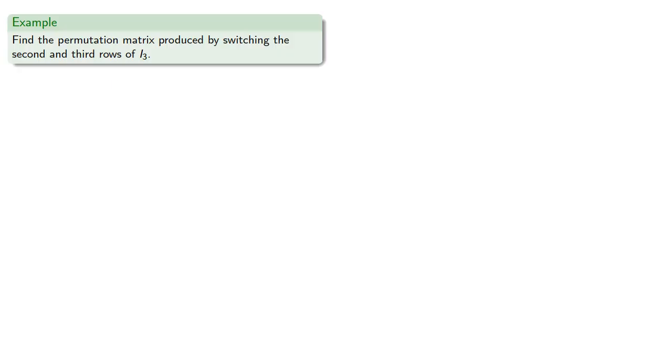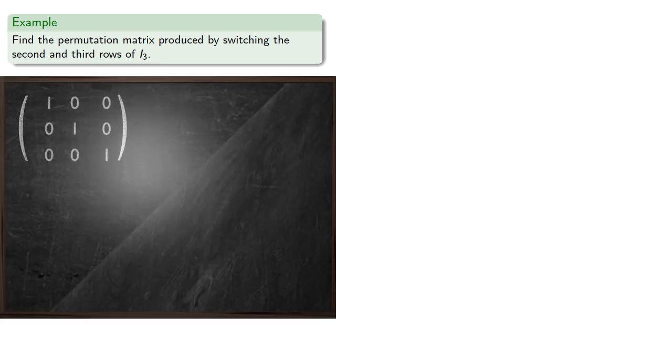For example, let's find the permutation matrix produced by switching the second and third rows of the 3 by 3 identity matrix. So we'll start with the 3 by 3 identity matrix, switch the second and third rows, and we weren't told to do anything with the first row, so we'll leave it where it was.